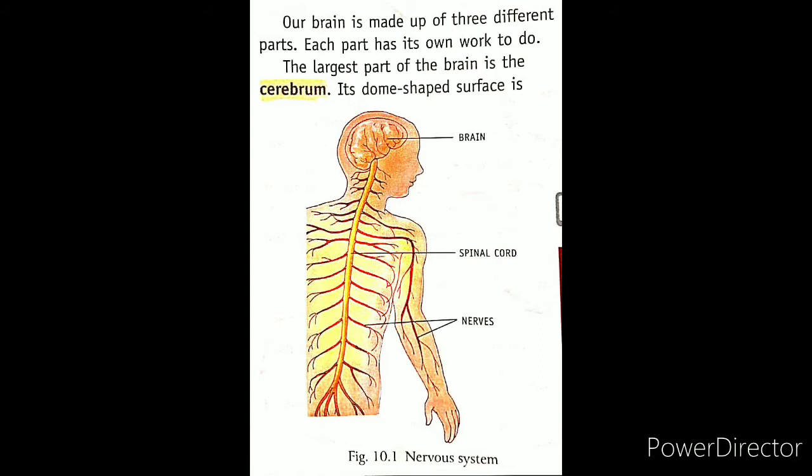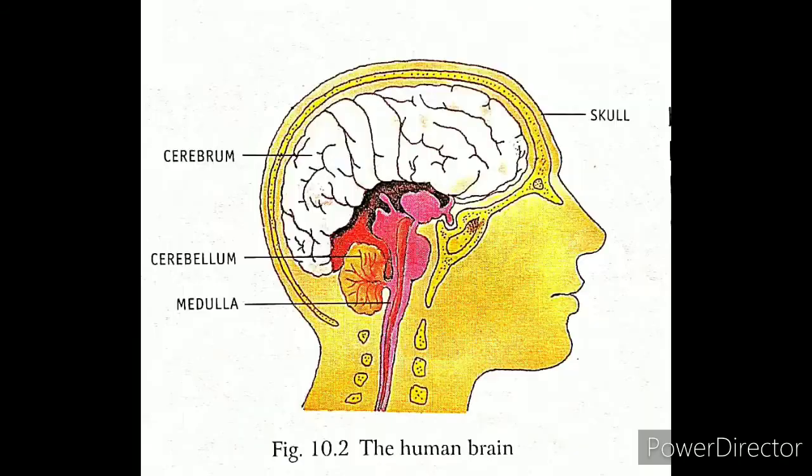Our brain is made up of three different parts, and every part has its own particular function. The three parts of the brain are: cerebrum, cerebellum, and medulla.